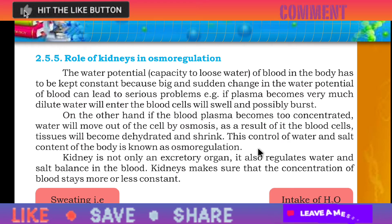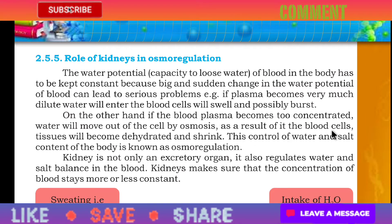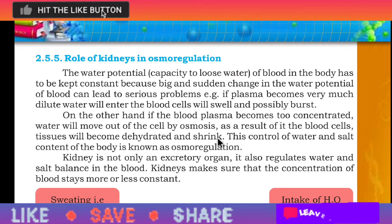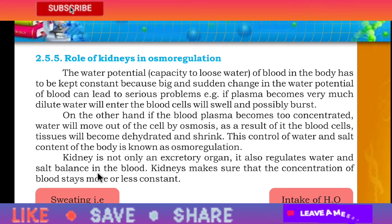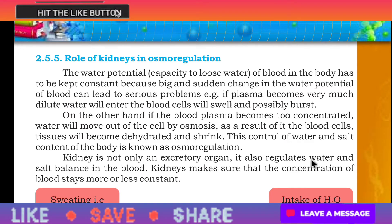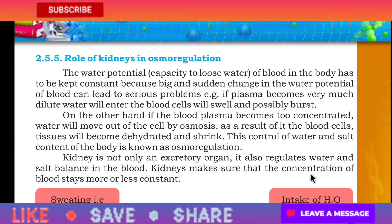This control of water and salt content of the body is known as osmoregulation. The kidney is not only an excretory organ — it also regulates water and salt balance in the blood. The kidney makes sure that the concentration of blood stays more or less constant.